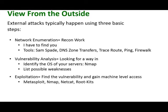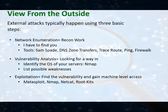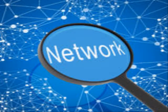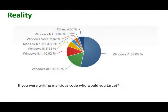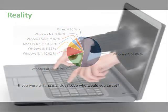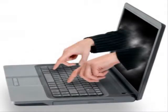Simply stated, these three different phases mean I have to find your network, find a weakness based on your operating system or application, and then exploit those weaknesses to gain control of a machine in your system.